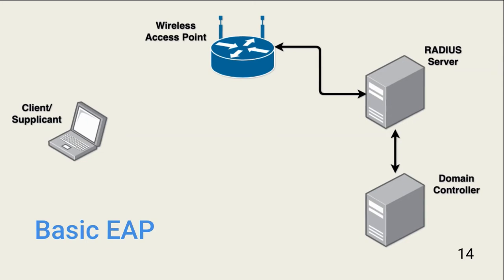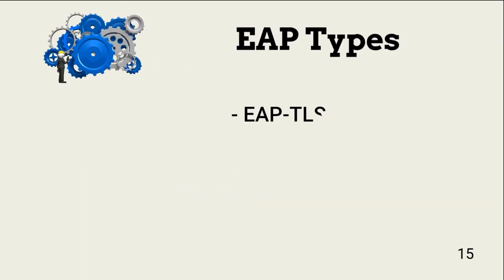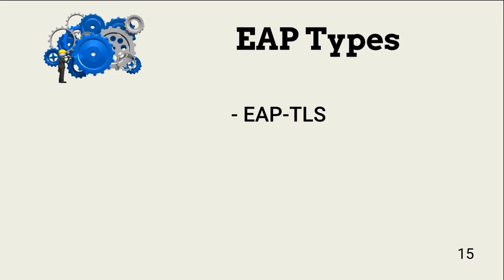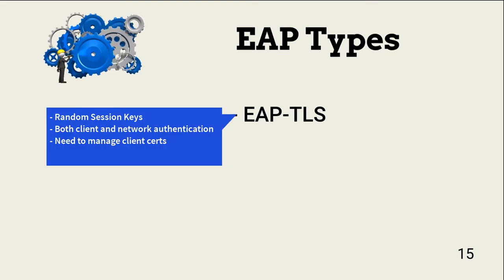The actual authentication process varies based on the type of EAP used and the authentication security needed. One commonly used type is EAP-TLS, which authenticates both the client and the network. This approach requires a supplicant certificate and a network certificate. EAP-TLS generates random session keys that secure communication between the AP and the client. One disadvantage is the need to manage certificates for all wireless clients.